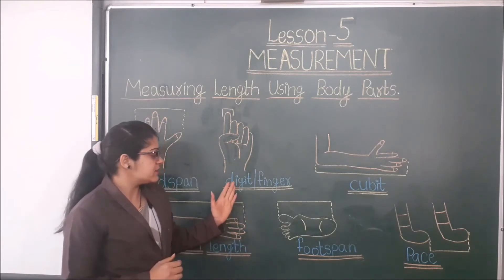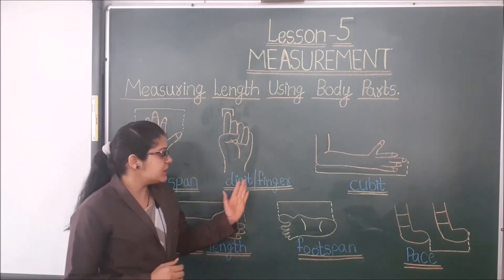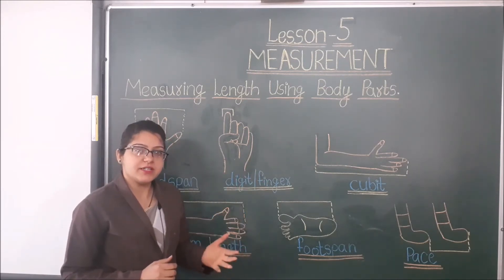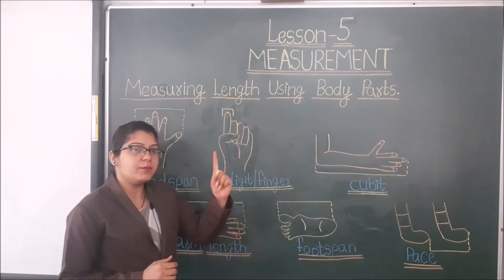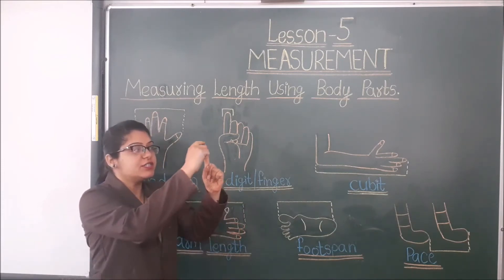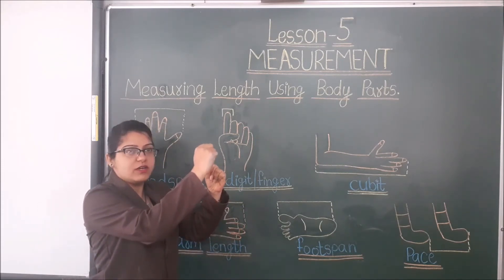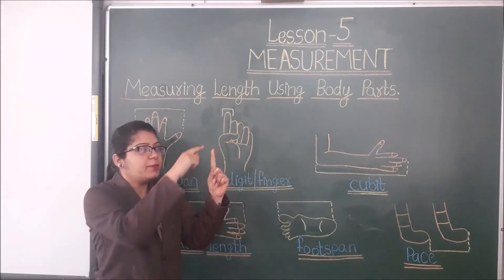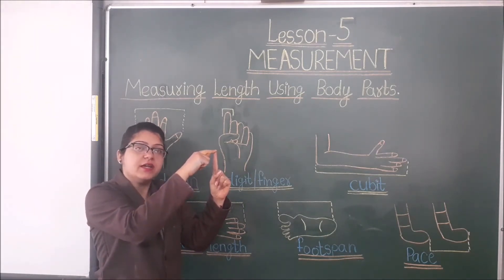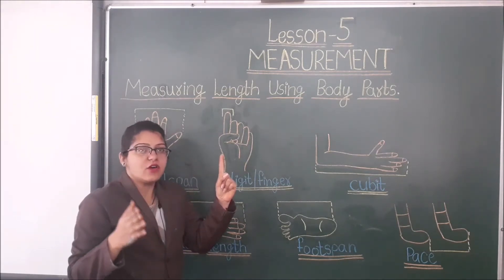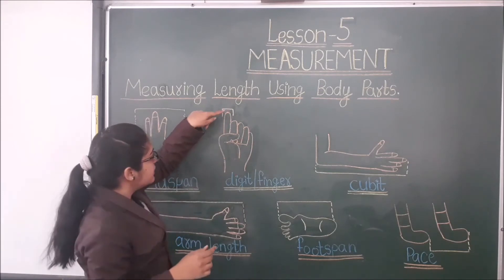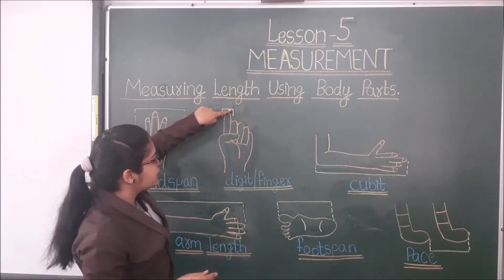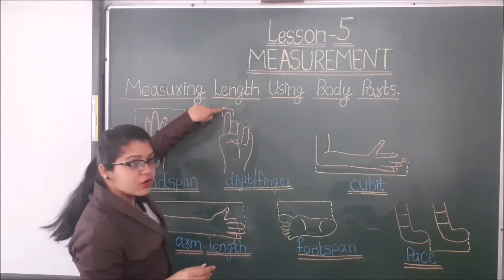The next is digit or finger. We can measure the thickness of anything with the help of our digit or finger. With one digit, we can measure the thickness of any thing. Digit means the thickness of our one finger.